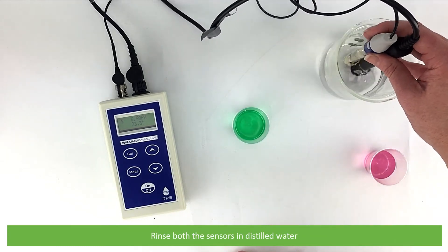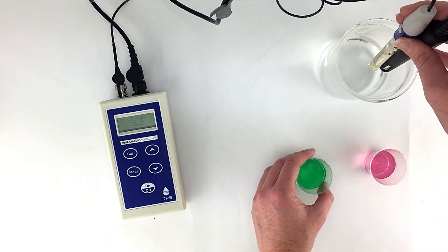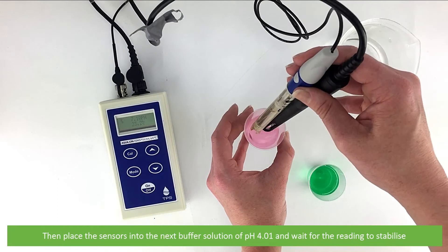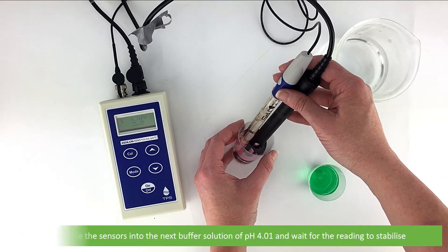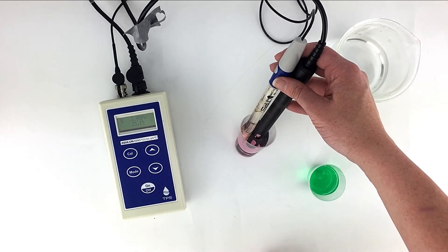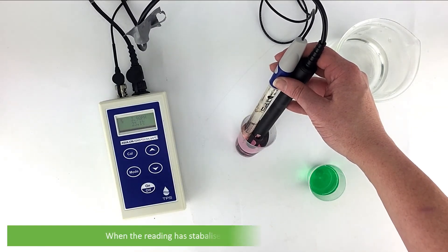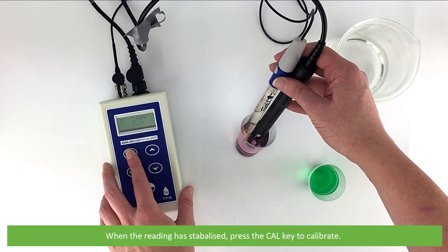Rinse both the sensors in distilled water. Then place the sensors into the next buffer solution of pH 4.01 and wait for the reading to stabilize. When the reading is stabilized, press the CAL key to calibrate.